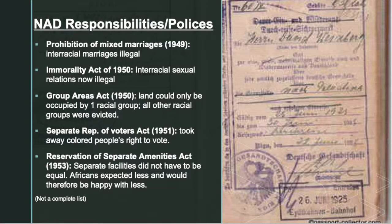Prohibition of Mixed Marriages made interracial marriages illegal. The Immorality Act of 1950 made interracial sexual relations illegal. The Group Areas Act of 1950 meant land could only be occupied by one racial group, and all other racial groups were evicted. The Separate Representation Act of 1951 took away colored people's rights to vote.